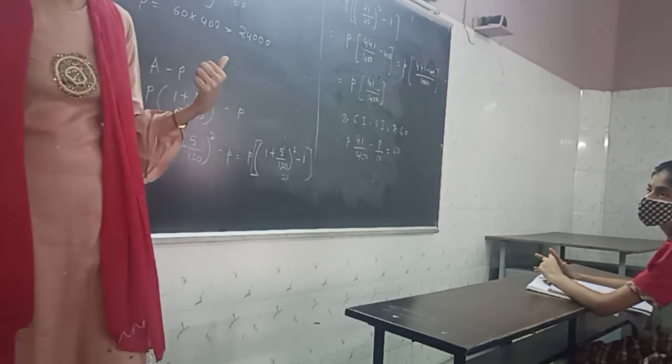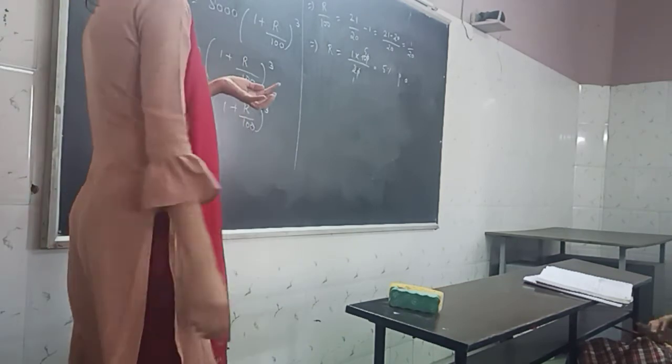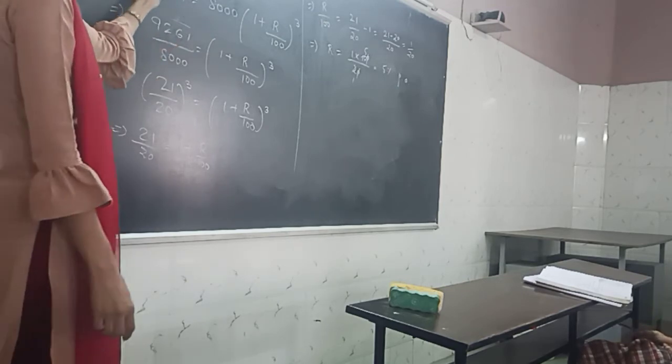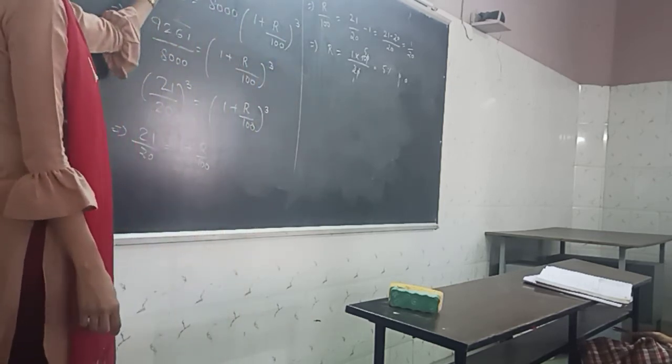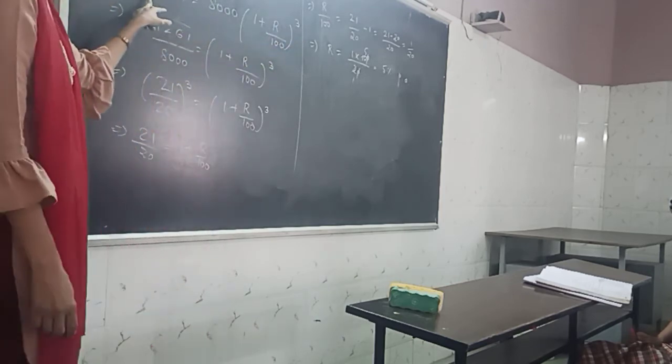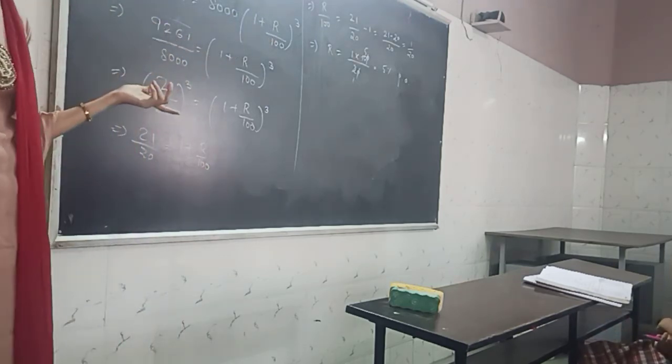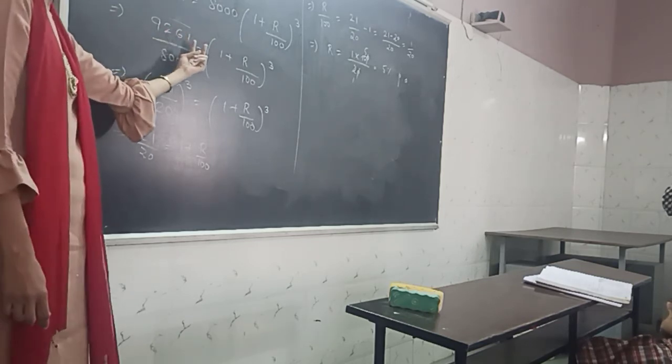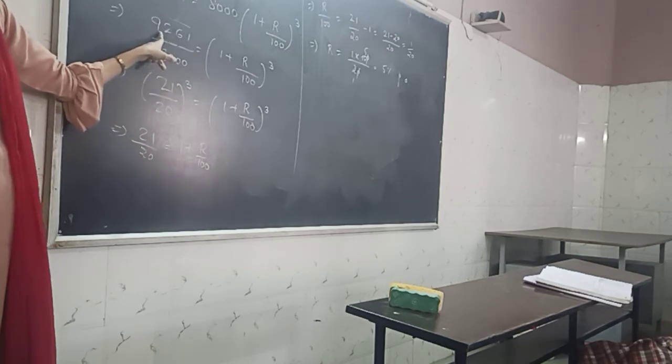Clear? This question, applying the formula A equals P multiplied by 1 plus R by 100 to the power T. 9261 is given, principle is 8000, 1 plus R by 100 cube. Now 9261 you have to get by factorization. So, 9261 upon 8000. This is the cube of 21 and 20. Last digit is 1, so cube root is 1. This is nearer to 2 cubed, nearer to 9. So, 21 by 20 all cubed.